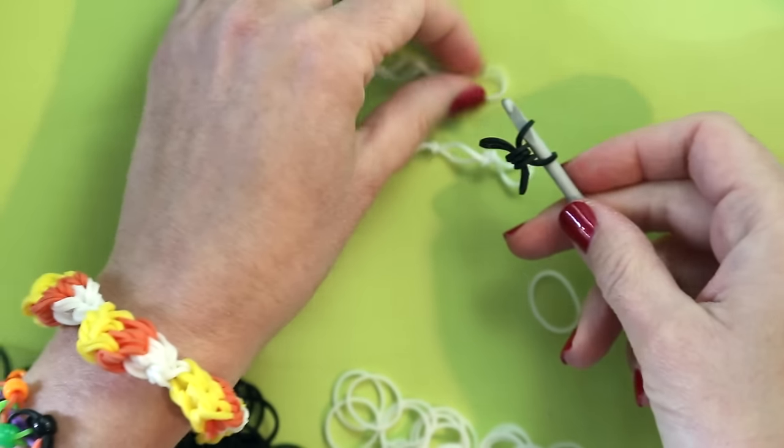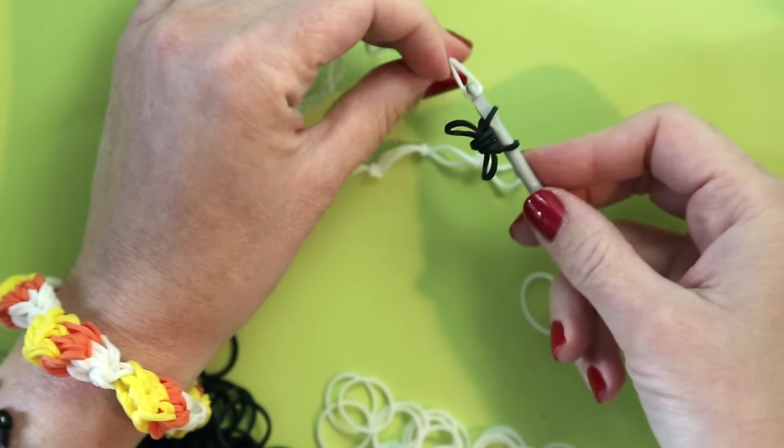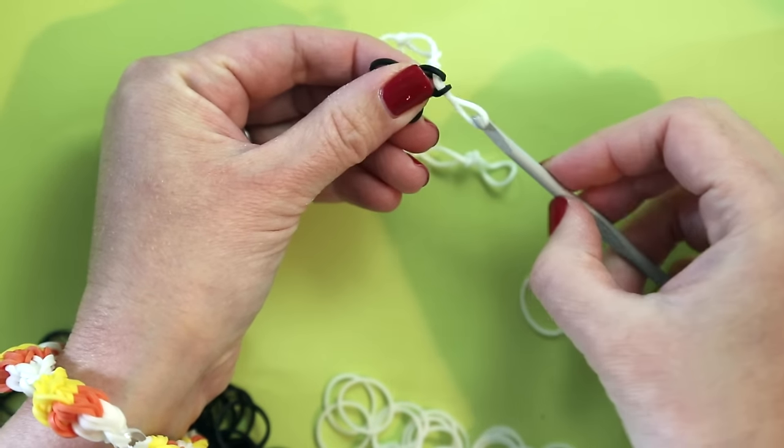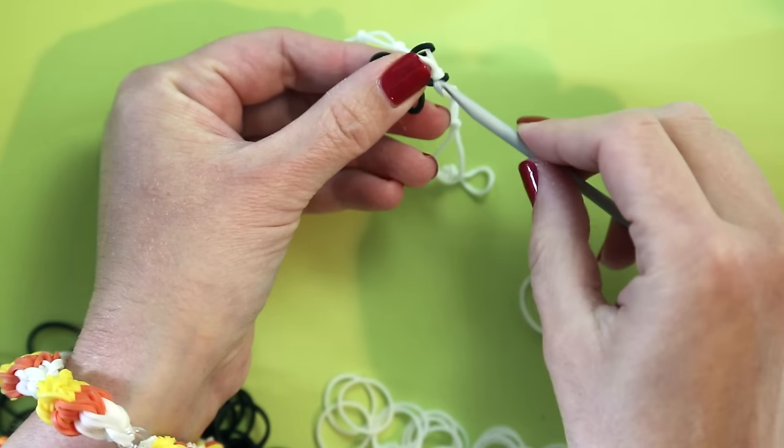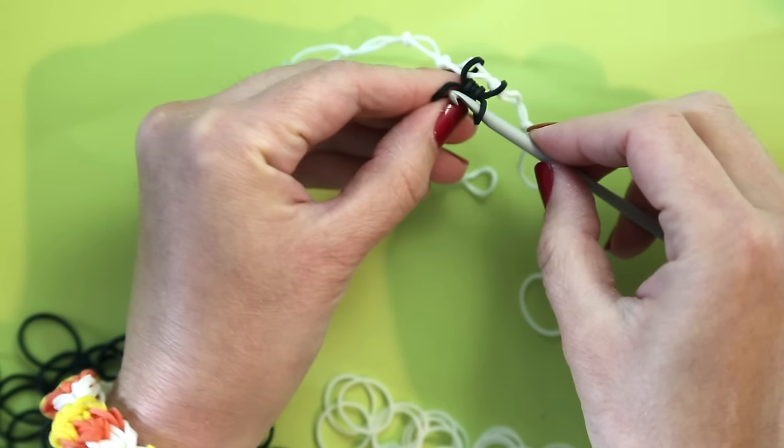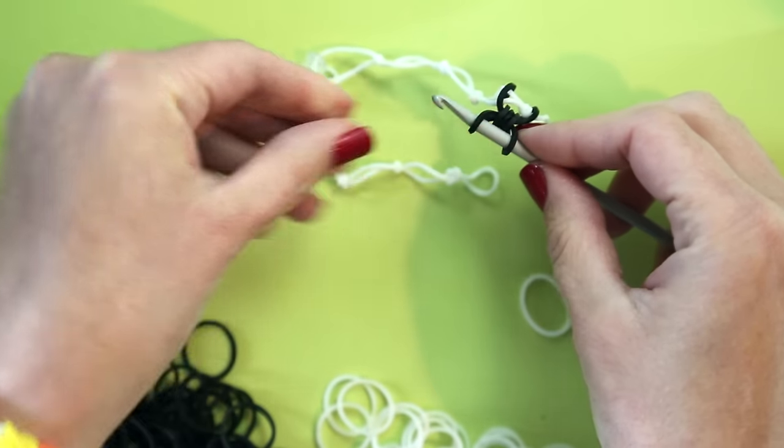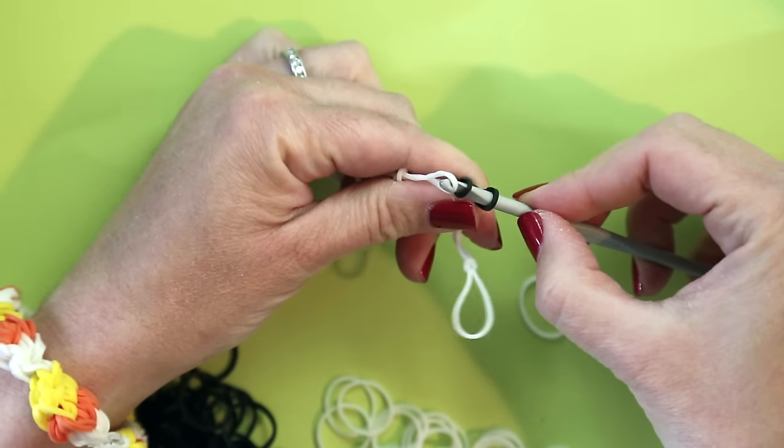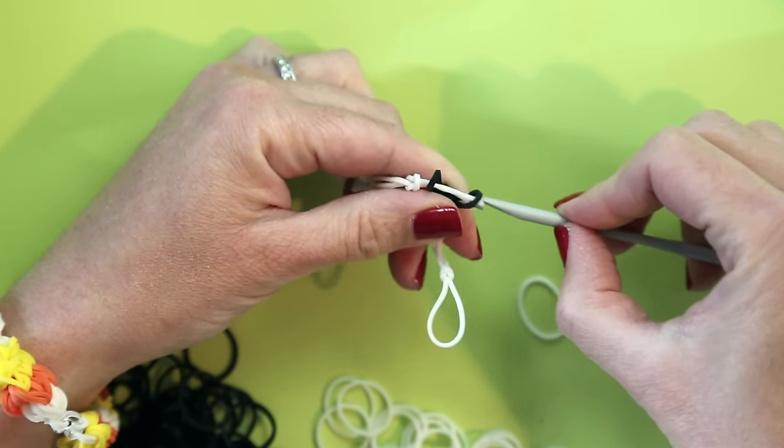Catch one side of your web and tug it through those two legs. Then do the same for the other side. Put your hook through the two legs. Catch the other side of the web and pull it through.